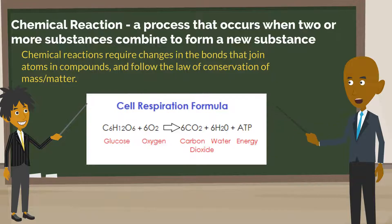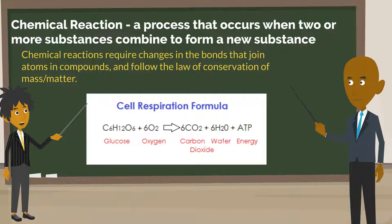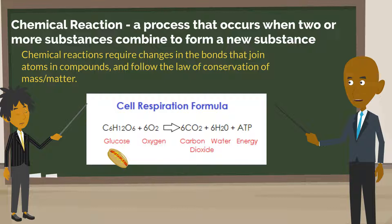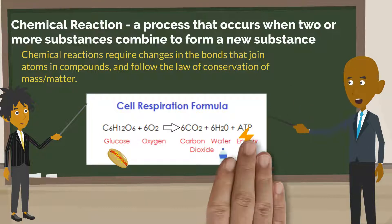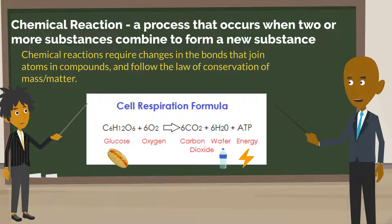A chemical reaction is a process that occurs when two or more substances combine to form a new substance. Chemical reactions require changes in the bonds that join atoms and compounds and follow the law of conservation of mass and matter. Let's take a look at these two concepts and the cell respiration formula. On our reactant side, on the left, we have glucose and oxygen, which come together to form carbon dioxide, water, and energy on the product side.